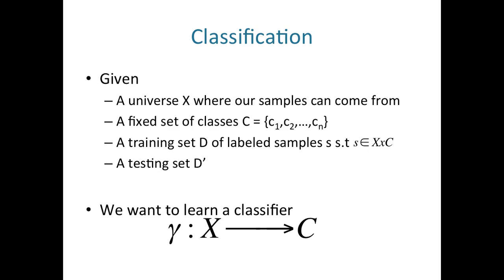We already covered this in our first class, but let's recall what we mean by classification. When we are talking about a classification problem, we have a universe X where our samples come from. We have a fixed set of classes — those are the dependent variables we are trying to figure out. We have a training set of labeled samples and a testing set. We basically learn a classifier C out of that training set, which we use to give labels to the testing set.